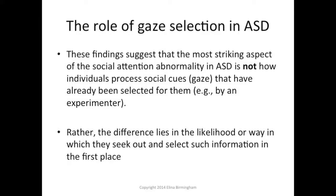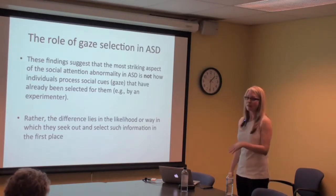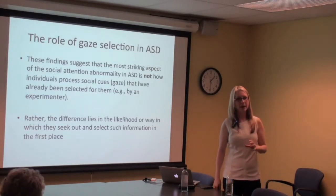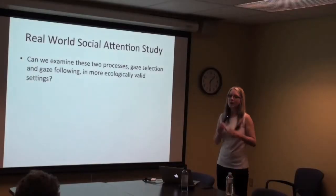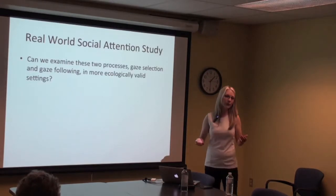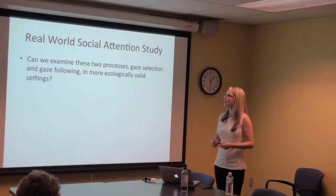This leads to my thesis: the most striking aspect of the social attention abnormality in autism is not how people process social cues once they've been selected for them — it's the difference in the likelihood or way in which people with autism select such information in the first place. If you present a central cue with nothing else on screen, that won't be a problem for someone with ASD. But my research and several other studies show that this initial selection and use of the eyes is what's different.